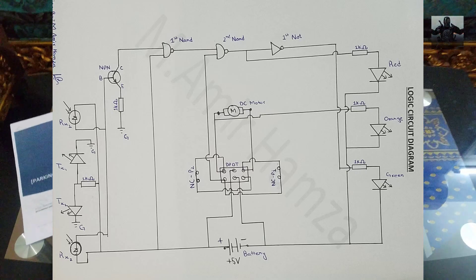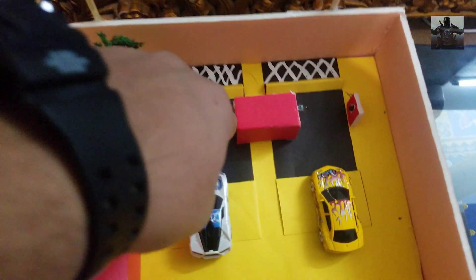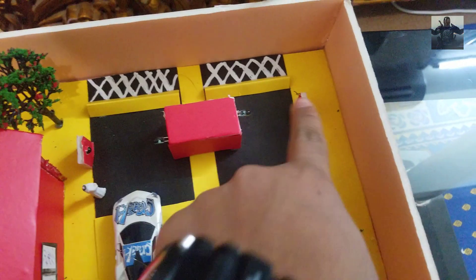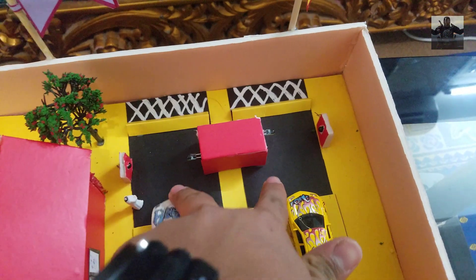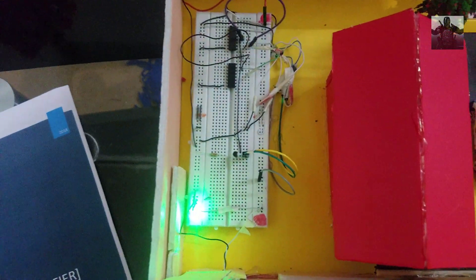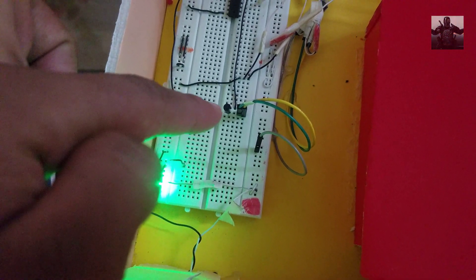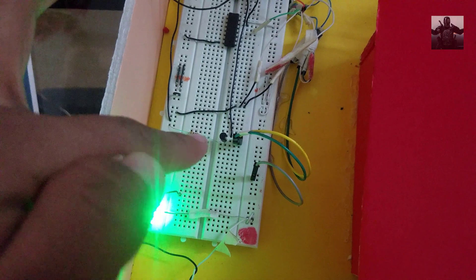Now let's explain how I made this circuit diagram into this project. Here are my IRs — here are the two transmitters, and here are the receivers connected. Here are my transmitters. These are the two parking slots I am going to use for this project. Here is the circuit I made. Here are the two ICs: a NAND IC and a NOT IC. Here you can see the NPN transistor I fitted, and here are the inputs coming from the IR.